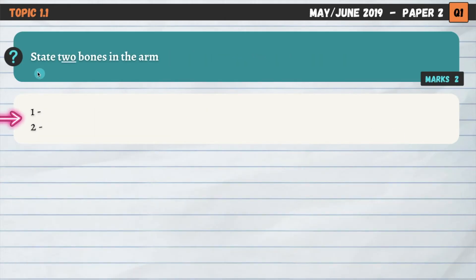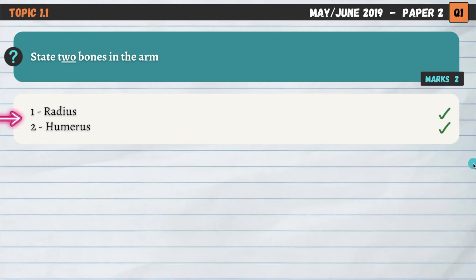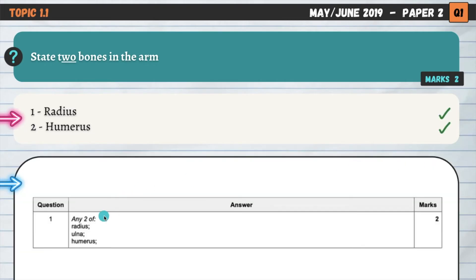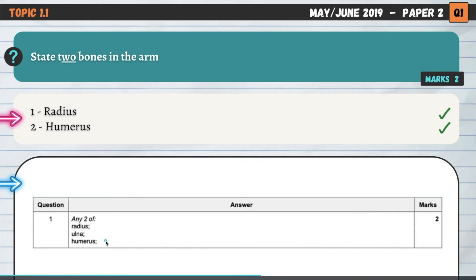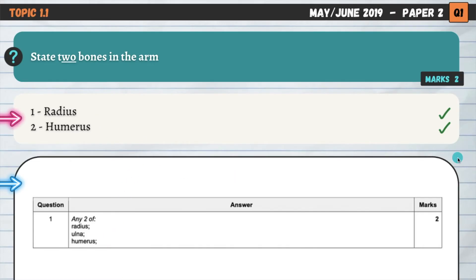State two bones in the arm. There are only three bones in the arm: the radius, ulna, and humerus. Any two of those for two easy marks.